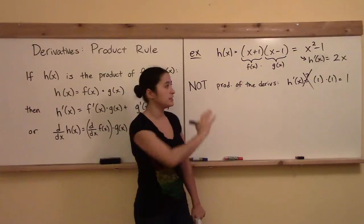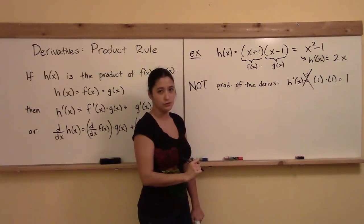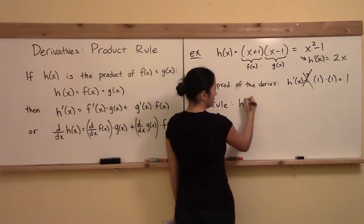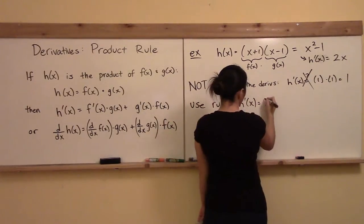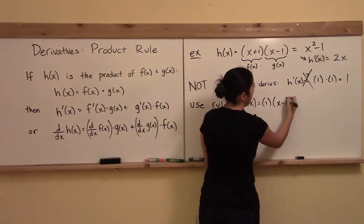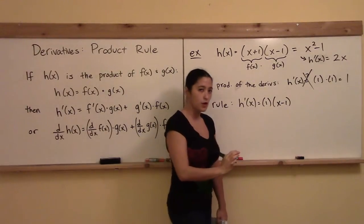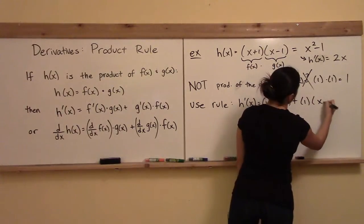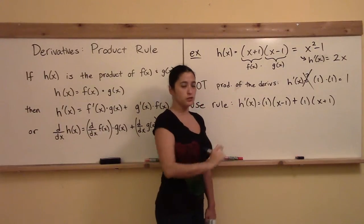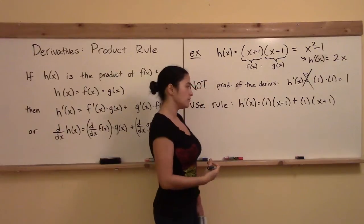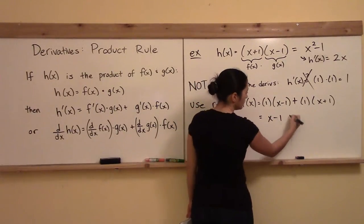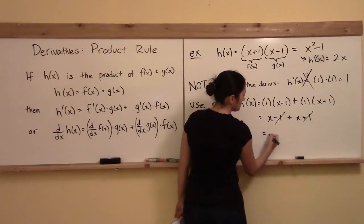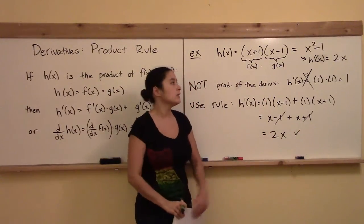So let's use the product rule. The derivative of h of x equals the derivative of f of x, which is 1, multiplied by g of x leaving it completely alone, then we add the derivative of g of x, which is also 1, multiplied by f of x leaving that totally alone. After foiling this out, we get x minus 1 plus x plus 1. Those constant terms cancel, and the two x's add together to give 2x — exactly what we found by the other route.